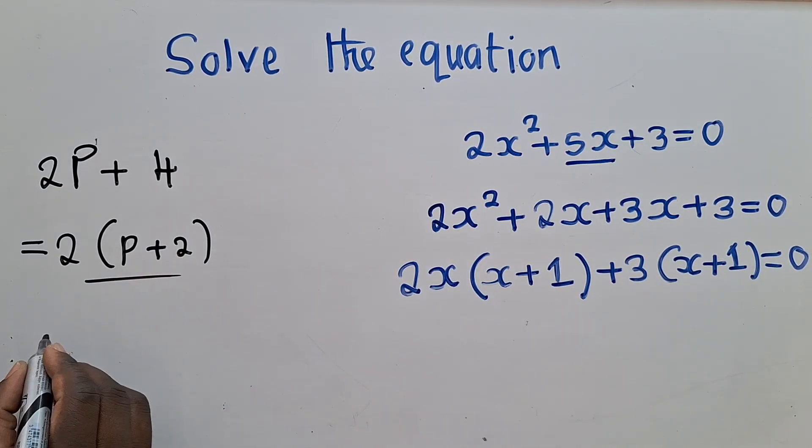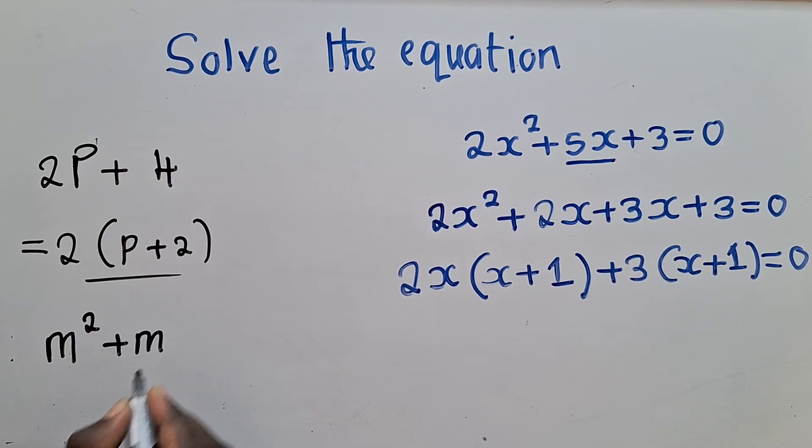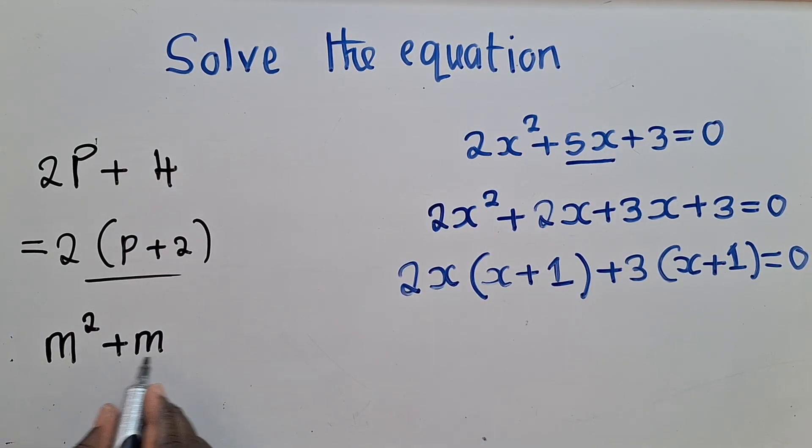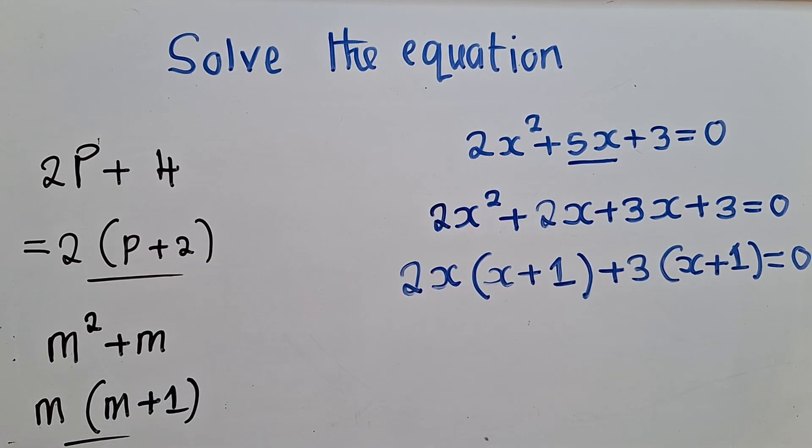Let me give you another example. When you've got m power 2 plus m and they ask you to factorize. You're going to say m is what is common. It's found here and here. So m into m power 2, it's m. m into m, that's a 1. So you've factorized.